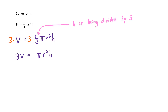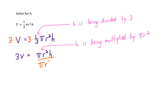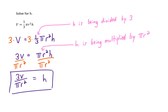Now h is being multiplied by pi r squared. To reverse that, we divide both sides by pi r squared. On the right the pi's and r squareds cancel, leaving just h. On the left we have 3V divided by pi r squared — and there's not much we can simplify there. So h equals 3V over pi r squared is the final answer, and that wraps up this video.